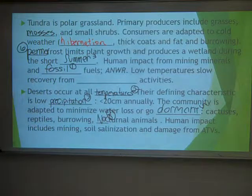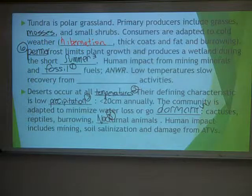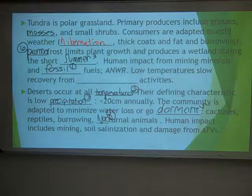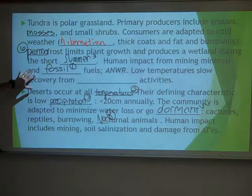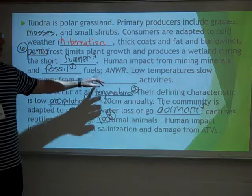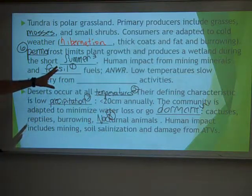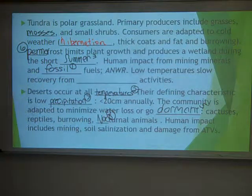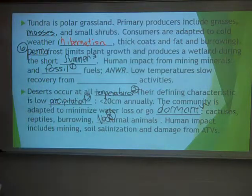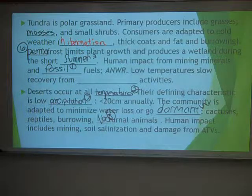Human impact has not been huge in tundra areas like it has been in more temperate and tropical areas, simply because it's too cold to raise crops and not very desirable to live there. However, there are areas with available minerals, including fossil fuels. One in particular is the Arctic National Wildlife Refuge in Alaska, which has been debated for decades about whether to drill for oil. Since it's a refuge, no oil drilling or mineral extraction is currently allowed, though geologists have identified significant petroleum deposits beneath it.